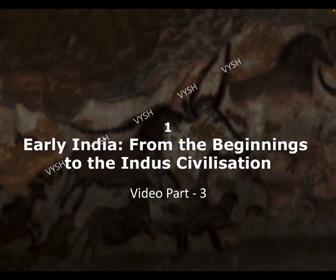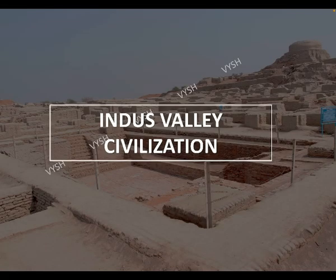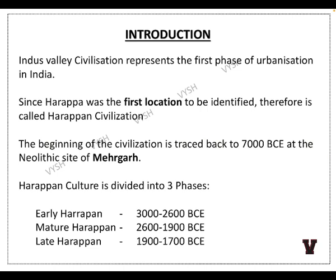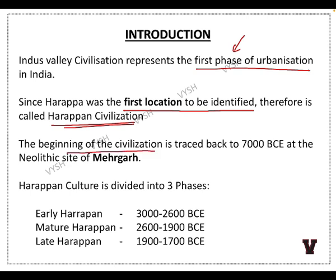This is part 3 of the first chapter. We are going to cover the Indus Valley Civilization. The Indus Valley Civilization represents the first phase of urbanization. Since Harappa was the first location to be identified, it is also called the Harappan Civilization. The beginning of the civilization is traced back to 7000 BCE at the Neolithic site of Mehergad. Harappan culture is divided into three phases: the early Harappan phase, the mature Harappan phase at its peak in urbanization, and the later Harappan phase when it started declining.